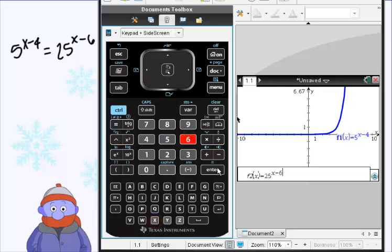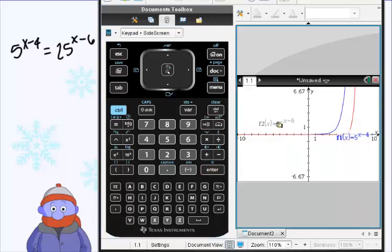Alright so we've got these two equations in, hit enter and you've got this graph. And it's hard to tell if there's a point of intersection on there right now.